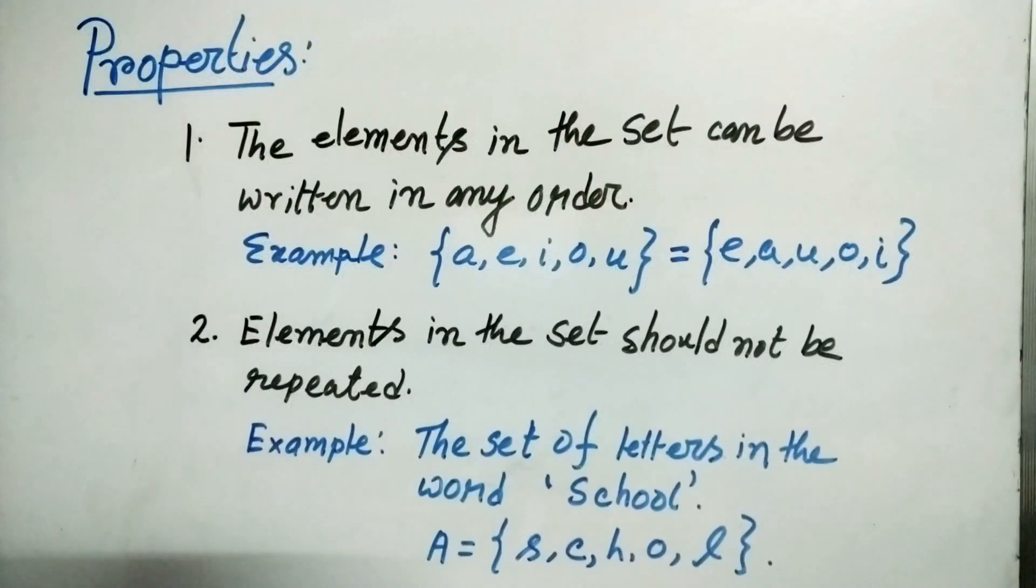Let's go for a proper example. The set of letters in the word school. So we have to take S once C H O and L. See here two O's are there but we have taken just one O in this set A.